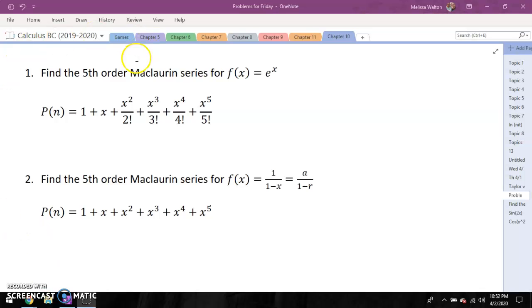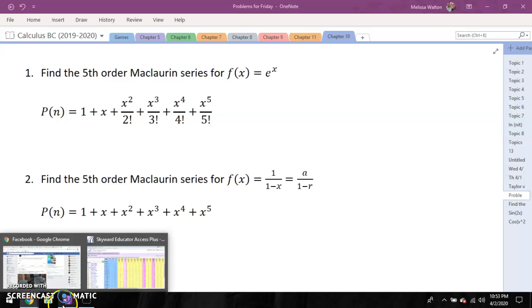Yesterday, fifth order Maclaurin series for f(x) equals e to the x. Well, e to the x is my favorite function to take derivatives of because it doesn't change, e to the x. So for this Maclaurin series, my fifth order one, we simply have 1 plus x plus x squared over 2 factorial, so on and so forth, and that gives us a beautiful approximation for e to the x.